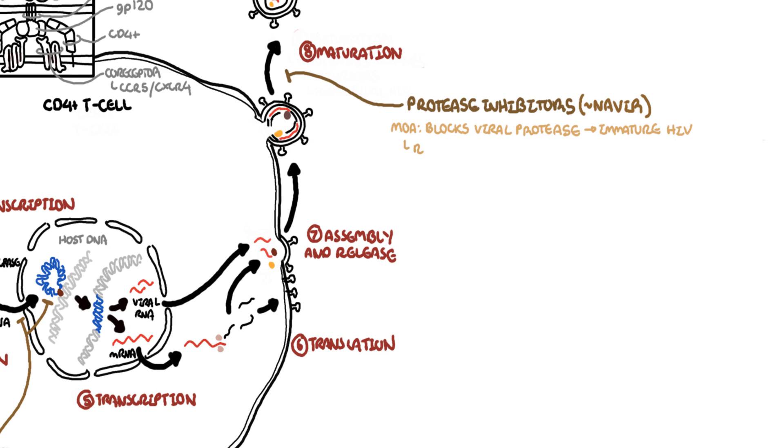The protease inhibitors usually require a booster, another agent such as ritonavir or cobicistat. Examples of protease inhibitors include atazanavir and darunavir. All protease inhibitors have the side effects of nausea, diarrhea, hyperlipidemia and insulin resistance. You can think of metabolic syndrome for protease inhibitors.